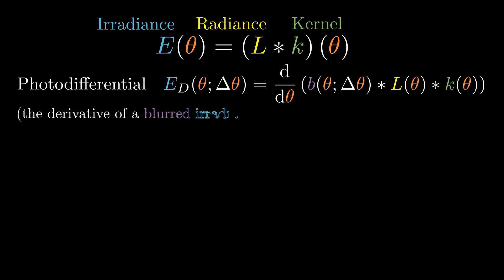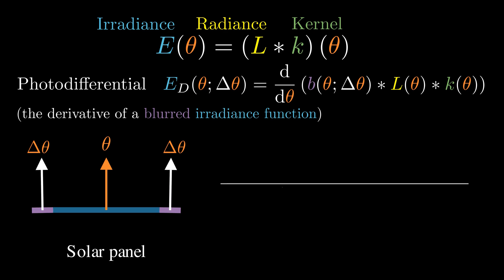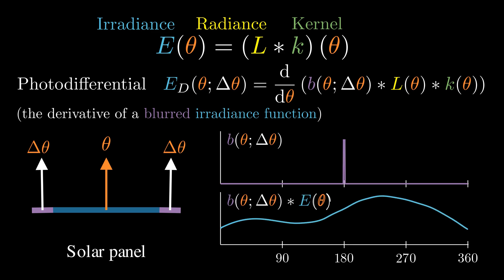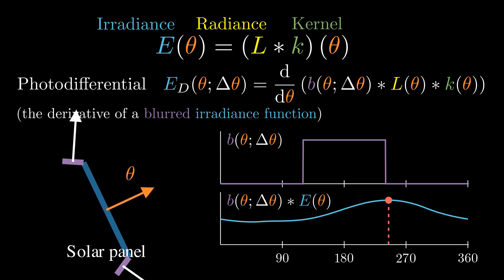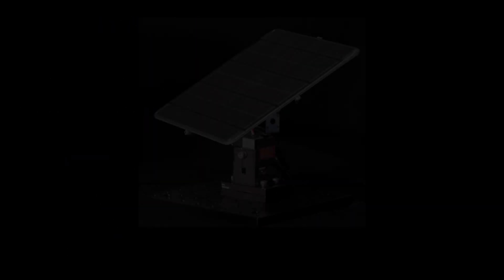This means that the photodifferential first blurs the irradiance function with the box filter and then takes its derivative. Let's visualize what this means. When the tilt angle is very small, the box filter closely approximates a delta function, so it has almost no effect on the irradiance function. As we increase the tilt angle Δθ, the kernel width of the box filter grows wider. When the tilt angle becomes sufficiently large, the local maxima in the original irradiance function disappears. This is incredible. What this means is that by computing the photodifferential, we are actually calculating the gradient of a blurred version of the irradiance function. Adjusting the panel orientation by following this gradient leads us toward a global maximum irradiance. And this holds true no matter how complex the environmental illumination is, or how many local maxima exist in the original irradiance function.